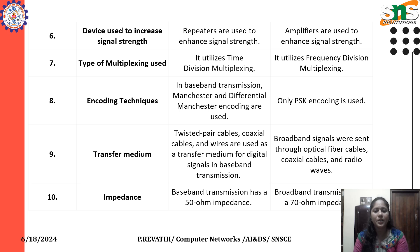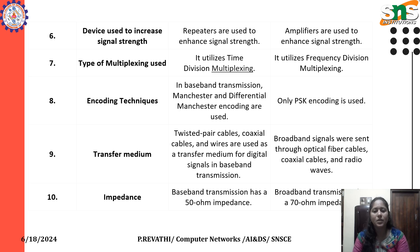Regarding transfer medium: in baseband transmission, twisted pair cables, coaxial cables, and wires are used as a transfer medium for digital signals. In broadband transmission, broadband signals are sent through optical fiber cables, coaxial cables, and radio waves. Regarding impedance: baseband transmission has a 50 ohm impedance, while broadband transmission has a 75 ohm impedance.